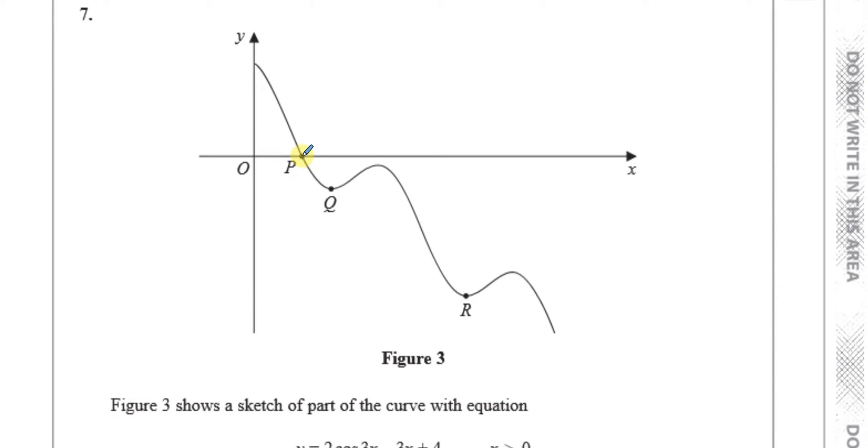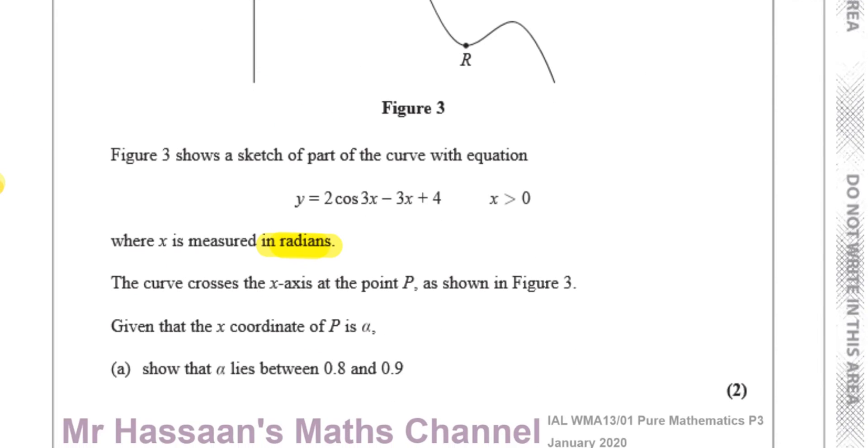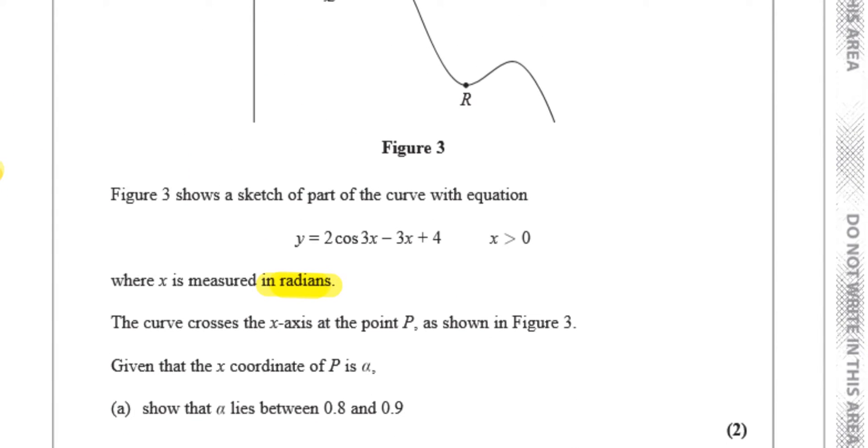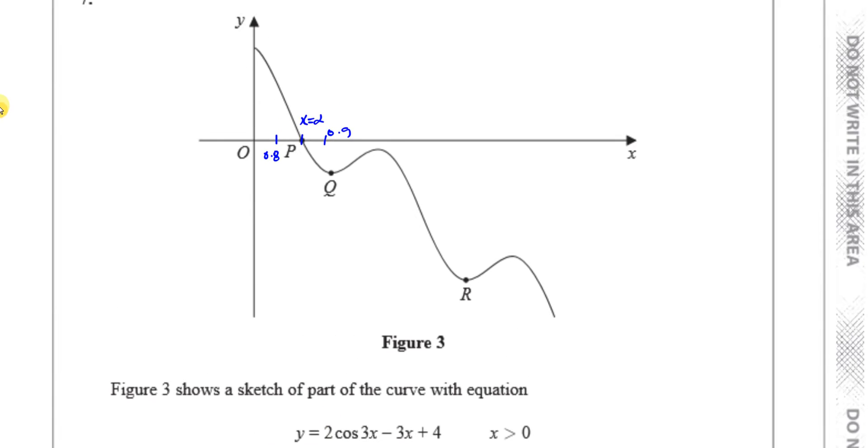So basically, this has got the value x equals alpha. And they're telling us that, supposing this is 0.8 and this is 0.9, the value of alpha lies somewhere between 0.8 and 0.9. Now, how can we prove this using this equation? How can we just prove it using it? We have to show that it lies between 0.8 and 0.9.